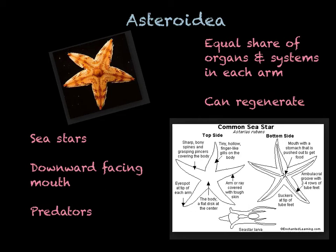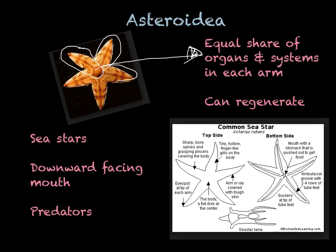Sea stars also have the unique ability to completely regenerate. As long as they contain a portion of the arm and some of the central disc, they can regenerate an entirely new sea star, because they carry an equal share of all of their organs and systems within that arm. Theoretically, you could cut this sea star into five equal pieces, and you would get five sea stars from that.